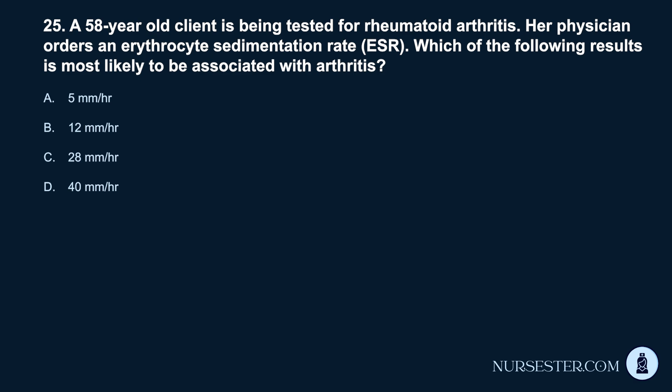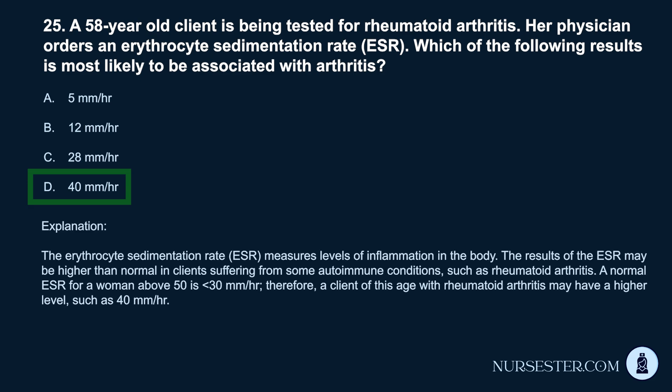Question 25. A 58-year-old client is being tested for rheumatoid arthritis. Her physician orders an erythrocyte sedimentation rate (ESR). Which result is most likely associated with arthritis? a. 5 mm/hr. b. 12 mm/hr. c. 28 mm/hr. d. 40 mm/hr. Correct answer: d. 40 mm/hr. The ESR measures levels of inflammation in the body. Results may be higher than normal in clients with autoimmune conditions such as rheumatoid arthritis. A normal ESR for a woman above 50 is less than 30 mm/hr; therefore, a client of this age with rheumatoid arthritis may have a higher level such as 40 mm/hr.